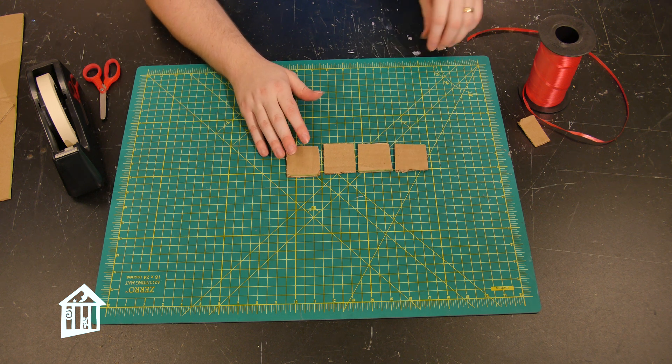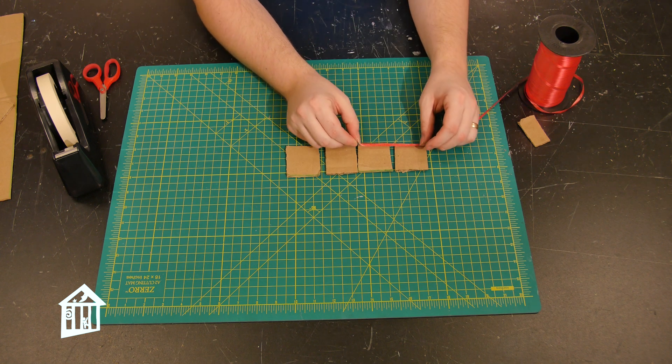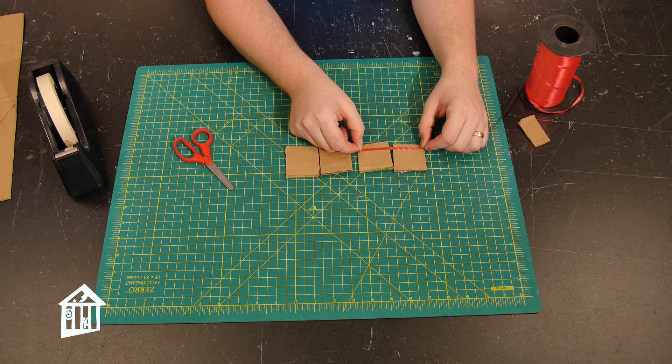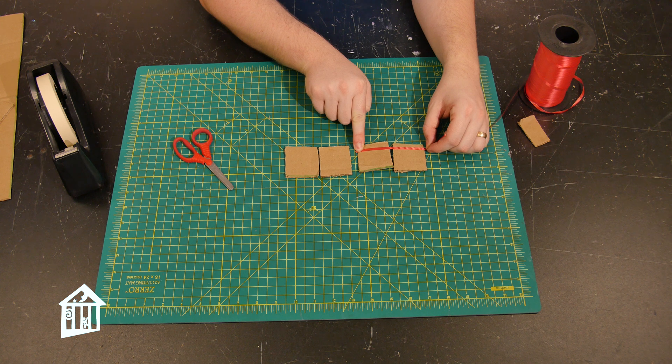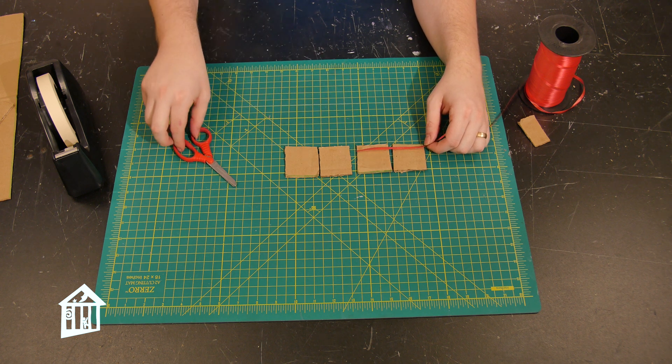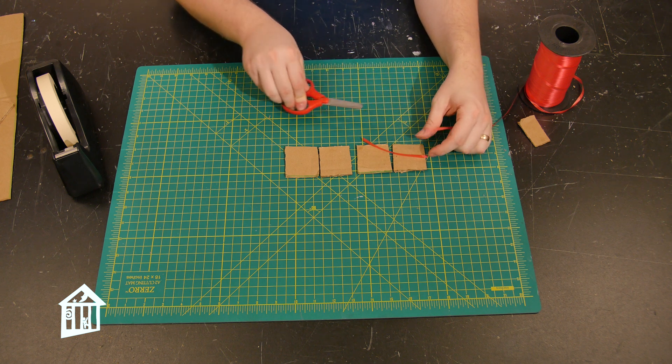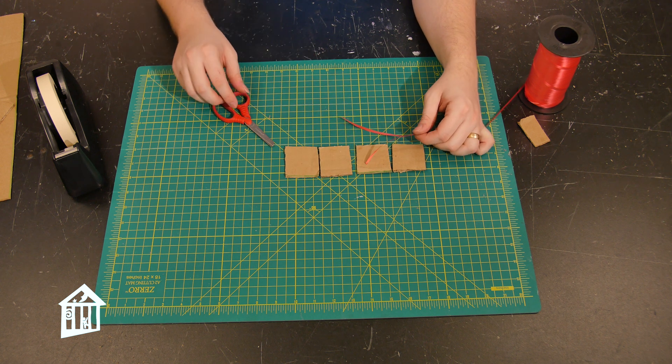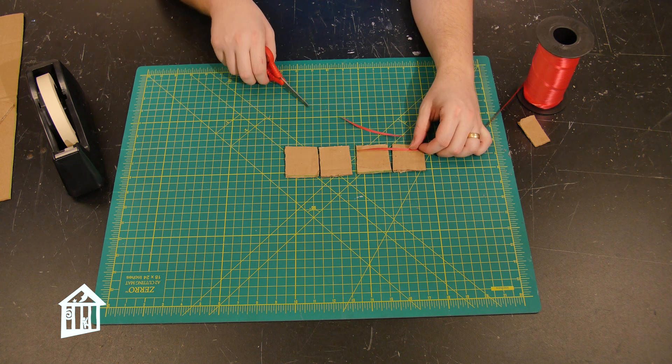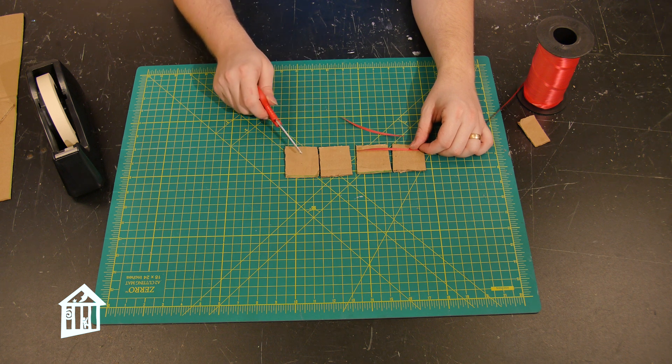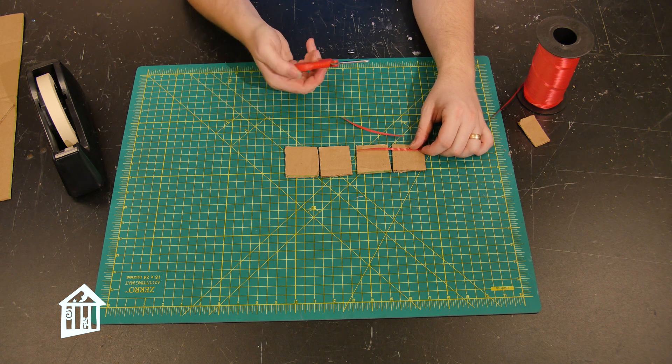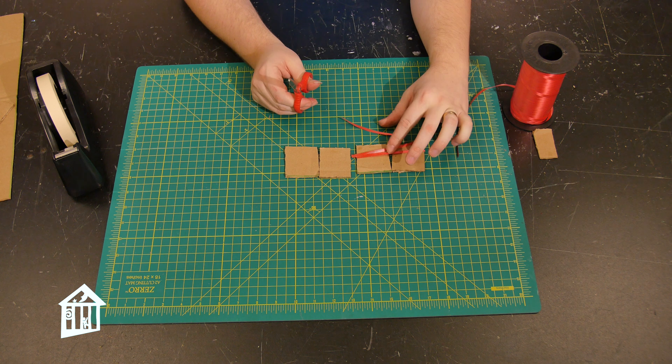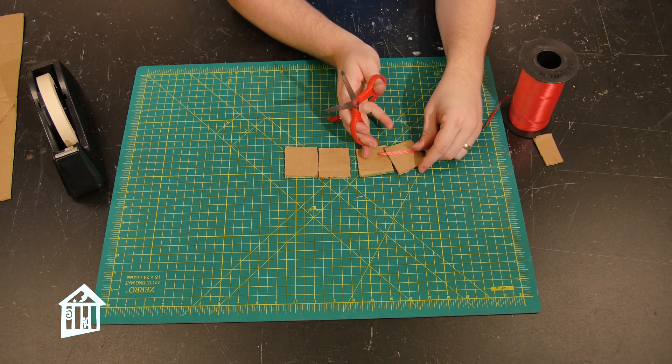So what we're going to do now is we are going to take the pieces of ribbon. And you really want the ribbon to be two of these squares. So you can use the squares to measure them out. You want it to be twice the length of one square. And you're going to need about three ribbons per square minus three. So I have four squares, three ribbons per square would be 12, then minus three would be nine. So we need nine pieces of ribbon that are all roughly the size of two of our squares.